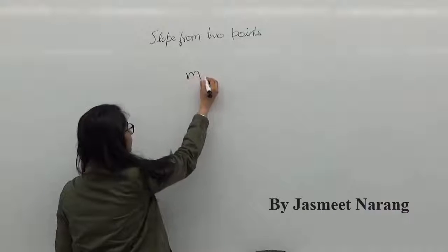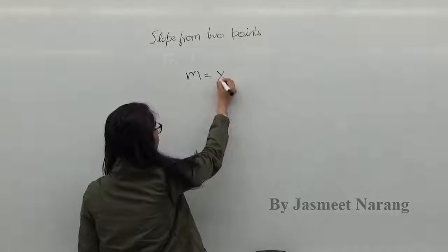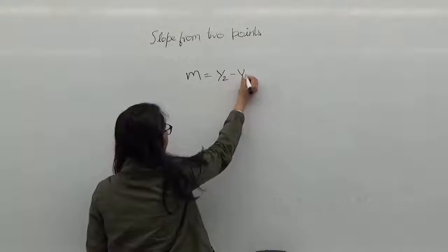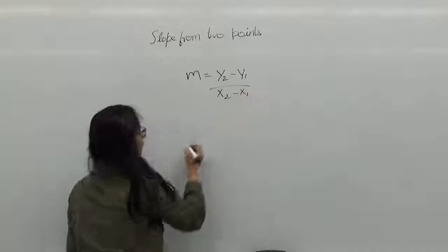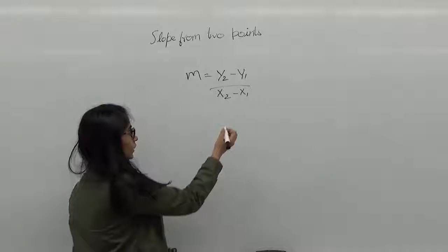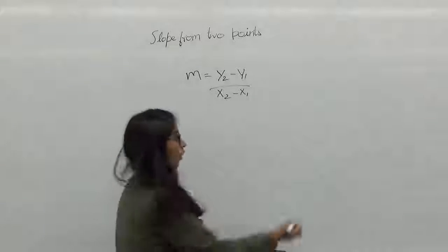The formula for slope is m equals to y2 minus y1 over x2 minus x1, where m is the slope and x1, y1 and x2, y2 are some points on the line.